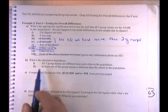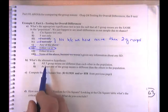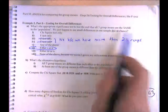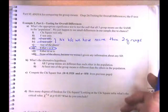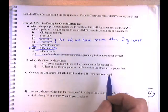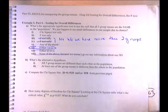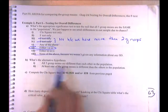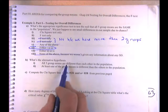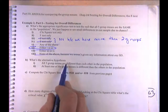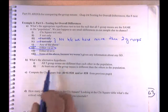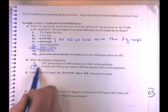The alternative hypothesis is just that at least one of the group means is different — not that they're all different from each other. We just want to know if there's anything there at all.